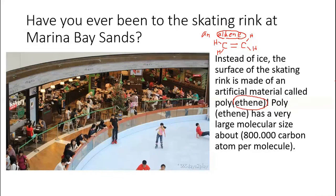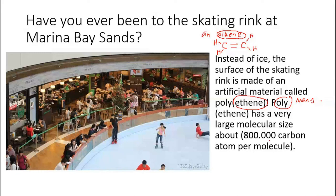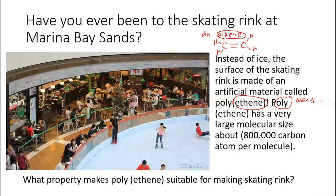Poly means many. We can make polyethene from ethene by reacting ethene with another ethene. Polyethene has a very large molecular size — about 800,000 carbon atoms per molecule. What properties make polyethene suitable for making a skating rink? Let's look at subtopics 24.1 and 24.2.